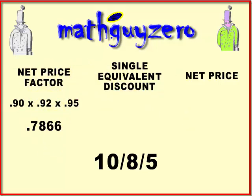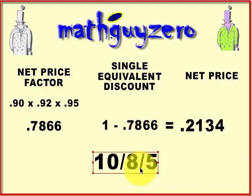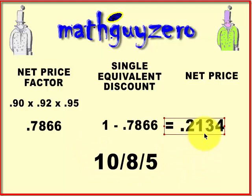To calculate the single equivalent discount, you simply subtract your net price factor from one, and that gives you your single equivalent discount. So instead of this 10-8-5, if enough time passes by, they're going to get like a 21.34% discount at the end of this.